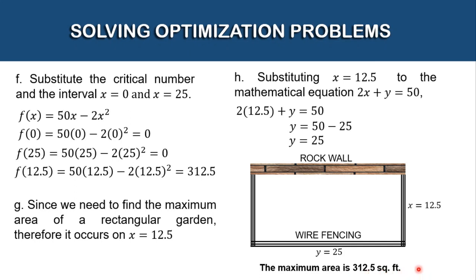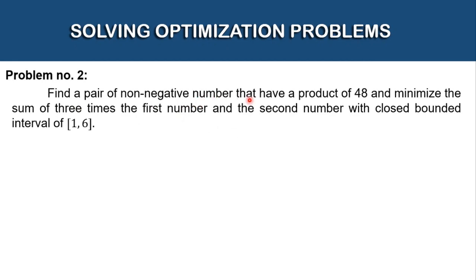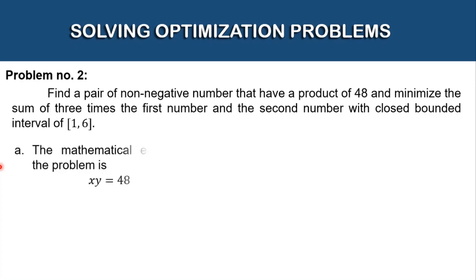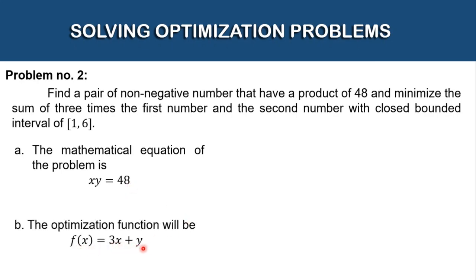For our second problem: find a pair of non-negative numbers that have a product of 48 and minimize the sum of three times the first number and the second number, with a closed bounded interval of 1 to 6. The mathematical equation is x · y = 48. The optimization function is f(x) = 3x + y, because we want to minimize three times the first number plus the second number.